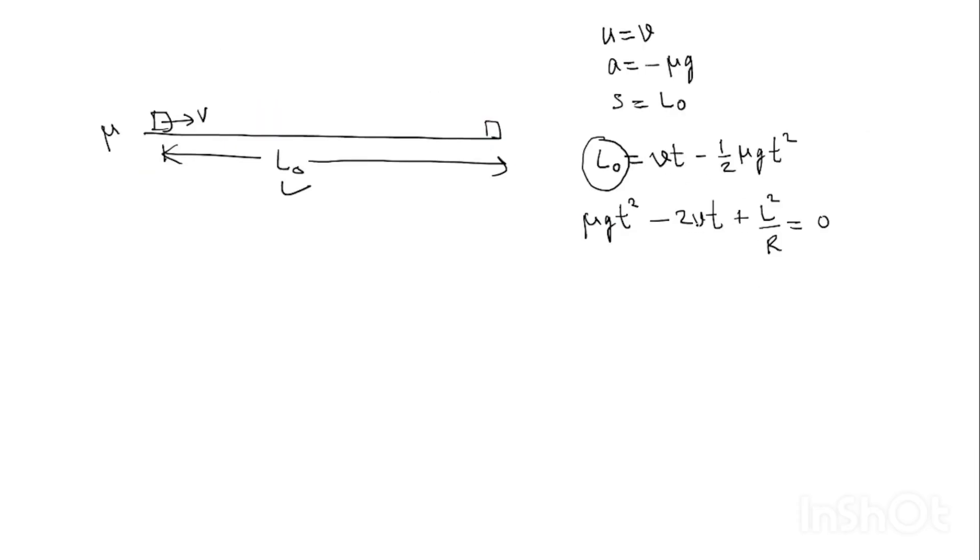And they are v plus minus √(v² minus μGL²/R) all upon μG. These are the two values of time. Now, you must be surprised that why two values are coming. We need only one time.